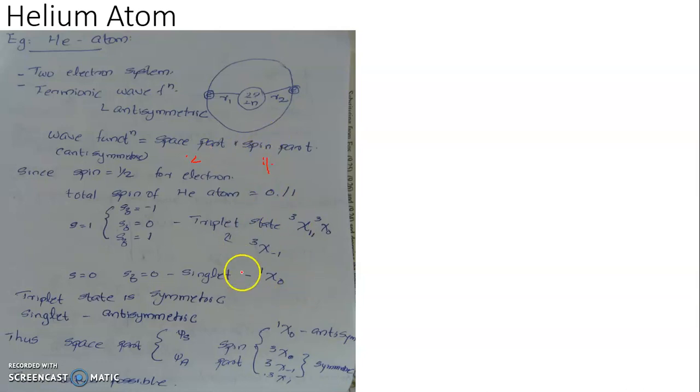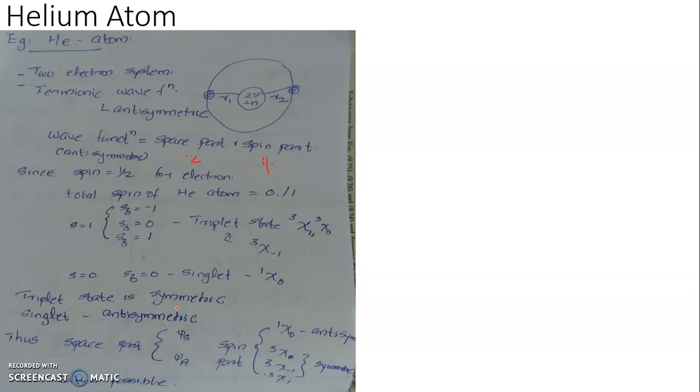It is found that the singlet state spin function is anti-symmetric and the triplet state spin function is symmetric. So when the space part is symmetric, you can combine it with the singlet spin state — that gives 3 combinations. And when the space part is anti-symmetric, you can combine it with the triplet state, and there will be only one choice.